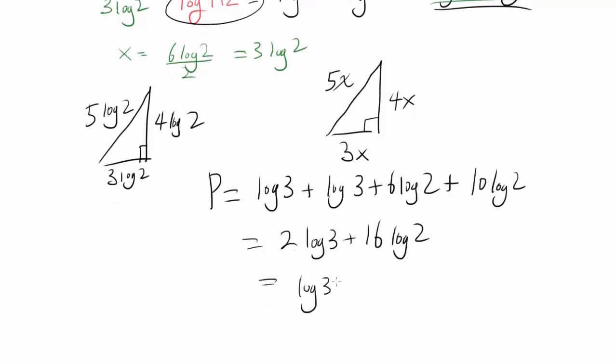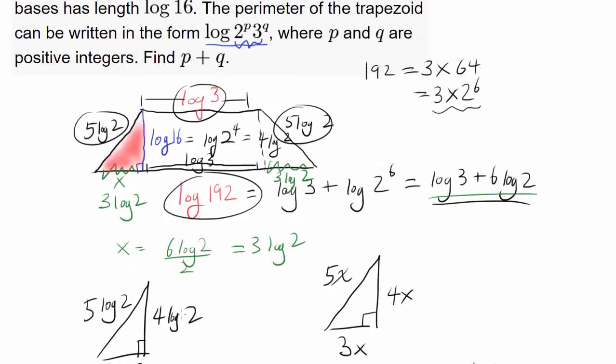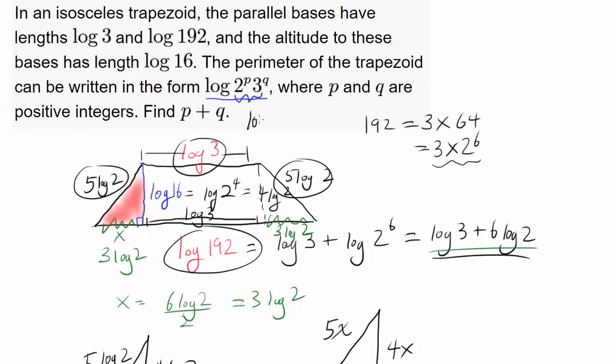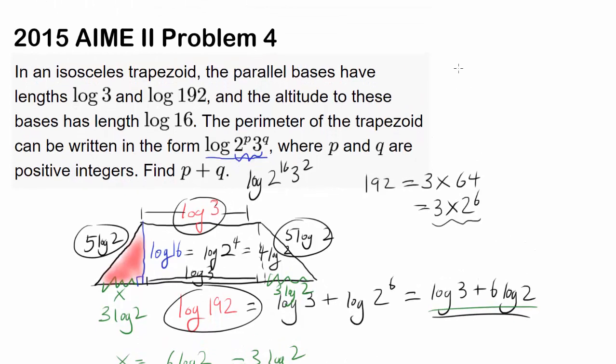Let's make these exponents: log 3^2 and log 2^16. When adding two logs with the same base, convert to multiplication. We have log(3^2 × 2^16) = log(2^16 × 3^2). So p = 16, q = 2, and p + q = 16 + 2 = 18. We are done.